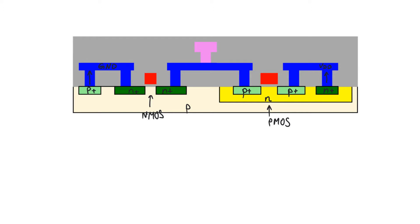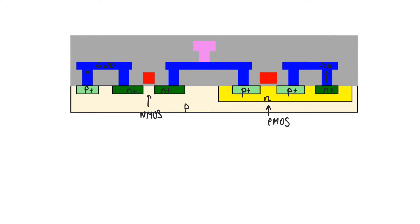We know those wires connect the well and substrate contacts, which have to go to ground and supply. This also gives us an idea that this is the source of the PMOS, this is the source of the NMOS, this is the gate of the NMOS, this is the gate of the PMOS, and thus this is the drain of the NMOS and this is the drain of the PMOS. They are shorted together using a metal wire in metal one, and then we contact this node using a wire made of metal two.